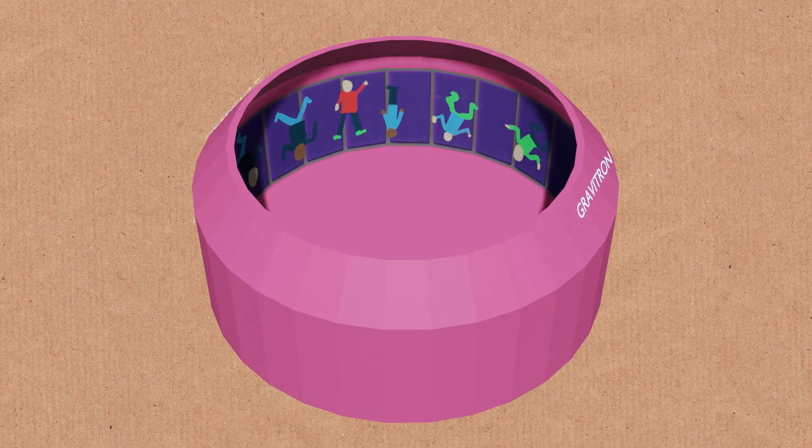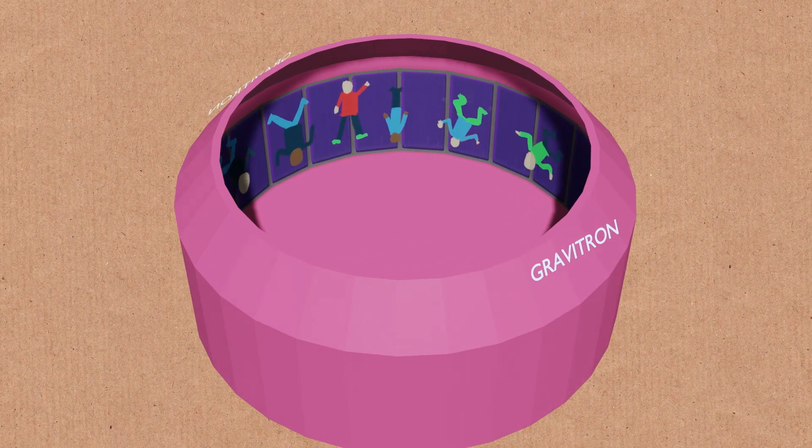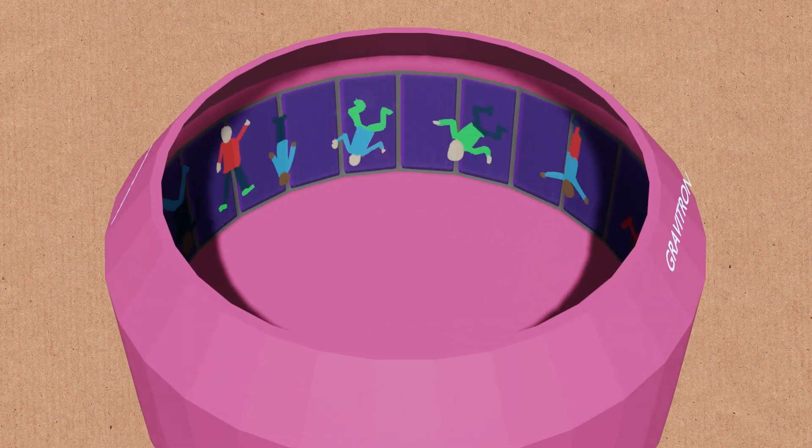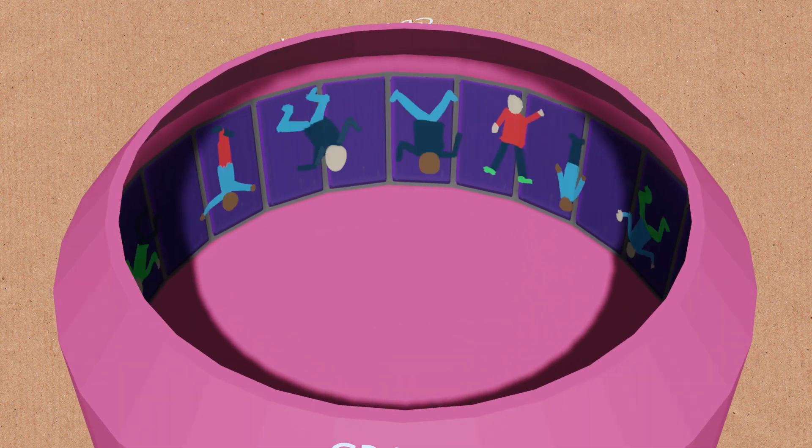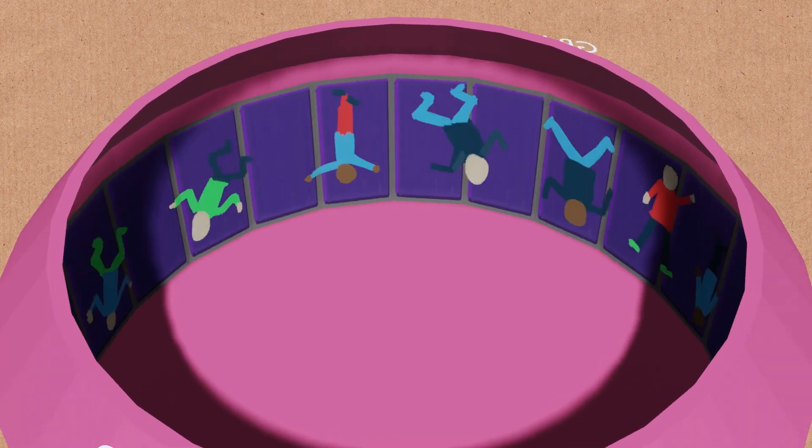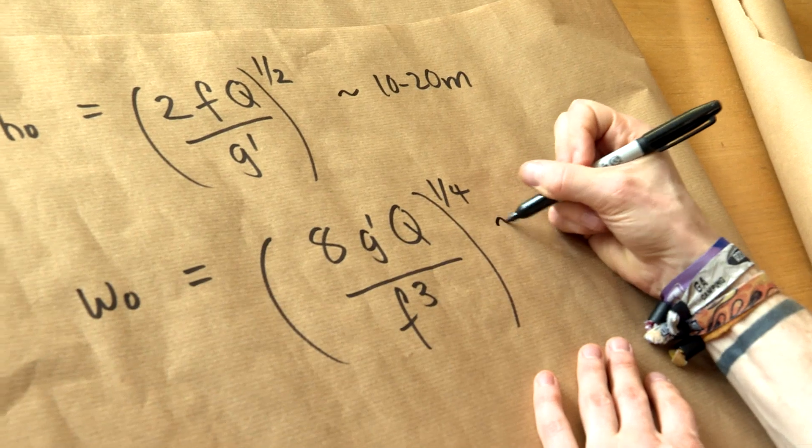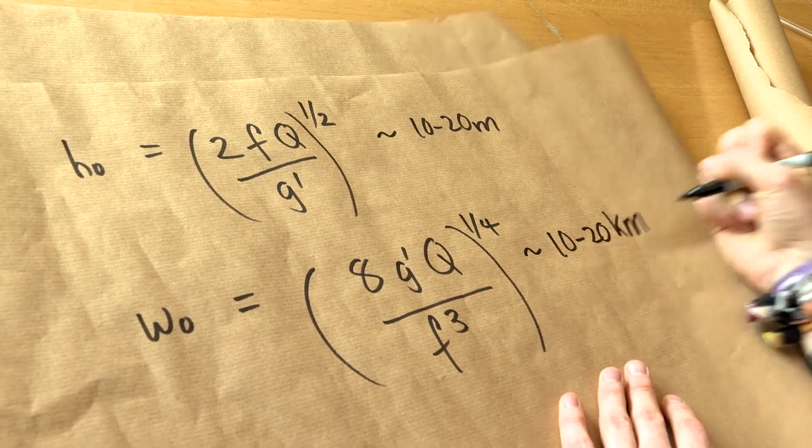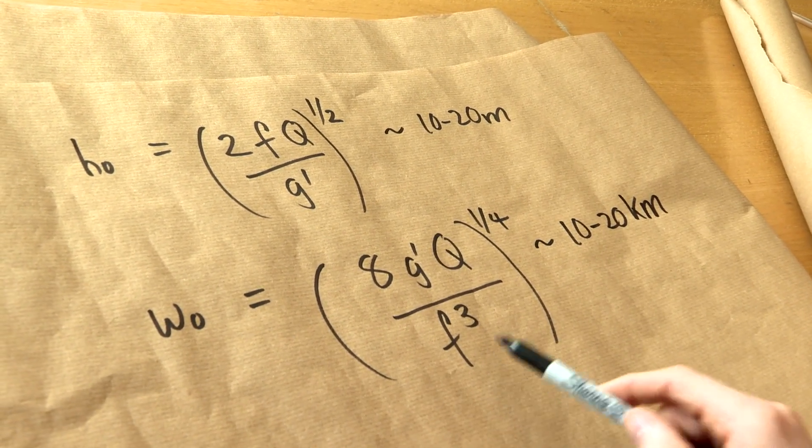And then with the rotation, if the rotation is larger, think about one of those fairground rides where you're in that circular thing and it spins really fast and you're pushed back against the wall. So the faster it goes, the more you're forced outwards, so you'd expect it to be less wide because you're forced more towards the coast the faster it's moving.